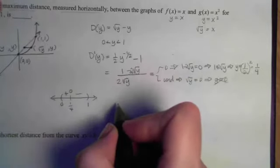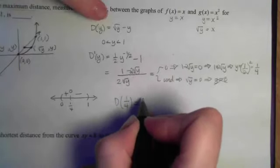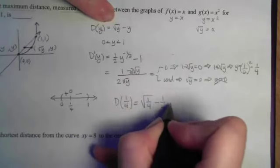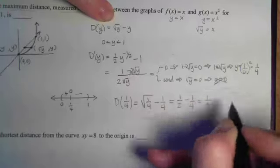And the question is the maximum distance. So the distance when I plug in that 1 fourth is a root 1 fourth minus a 1 fourth. That's a half minus a fourth gives me a 1 fourth.